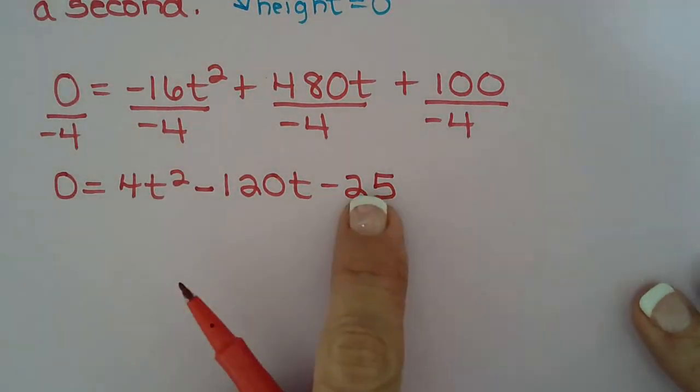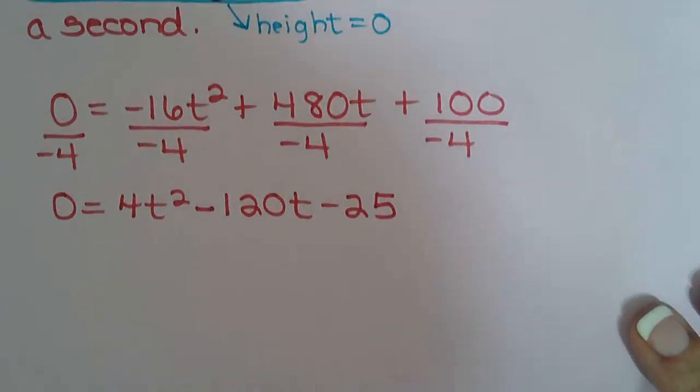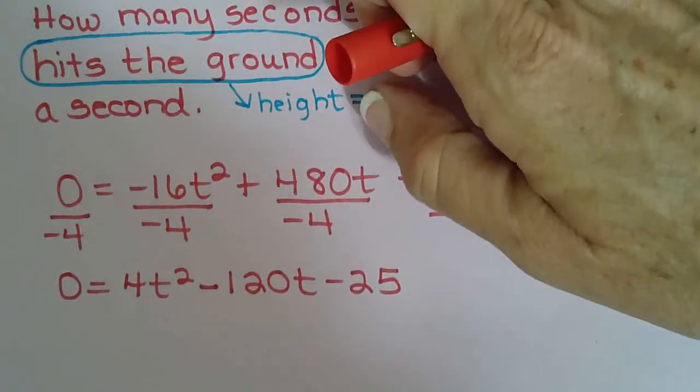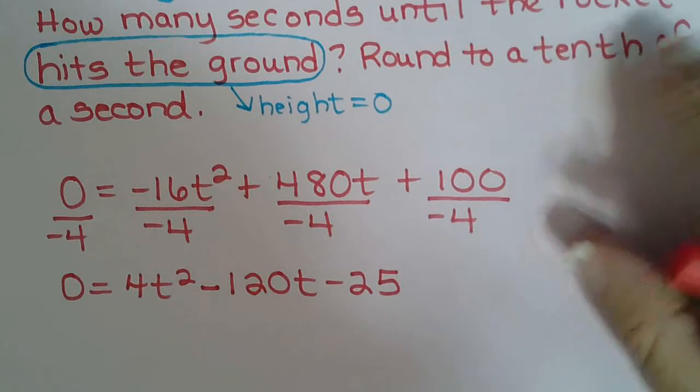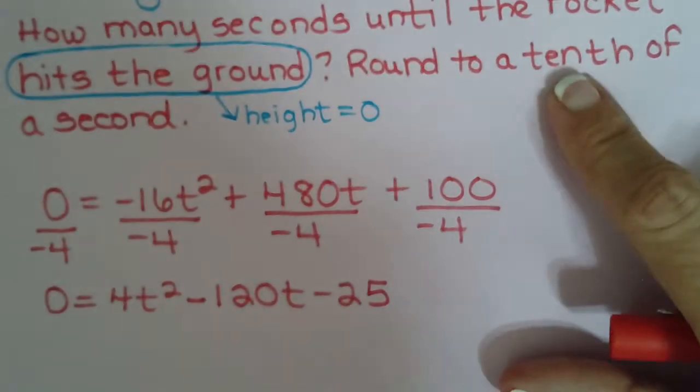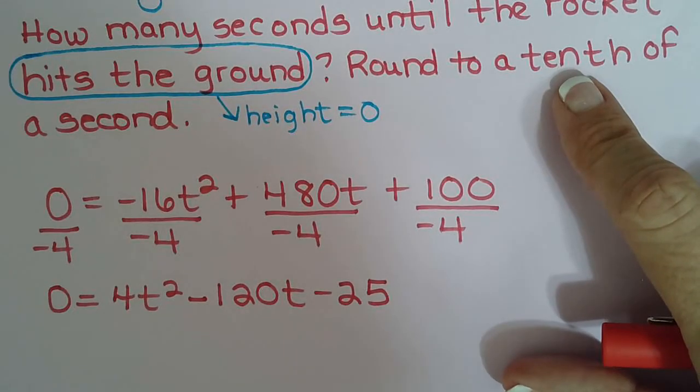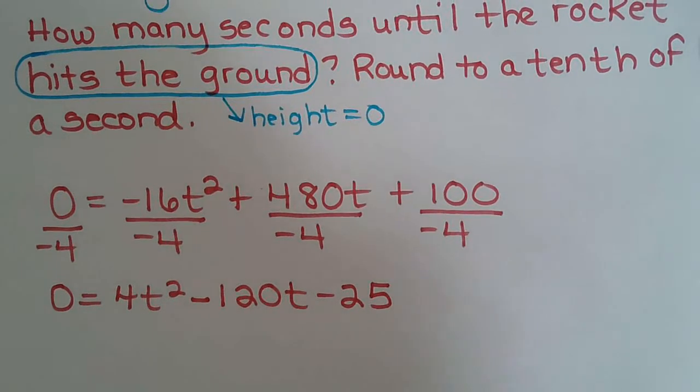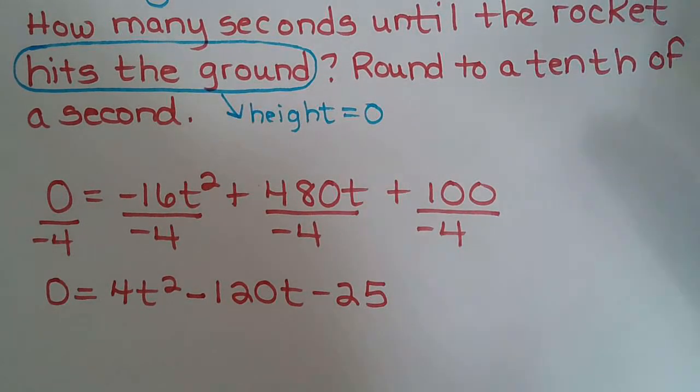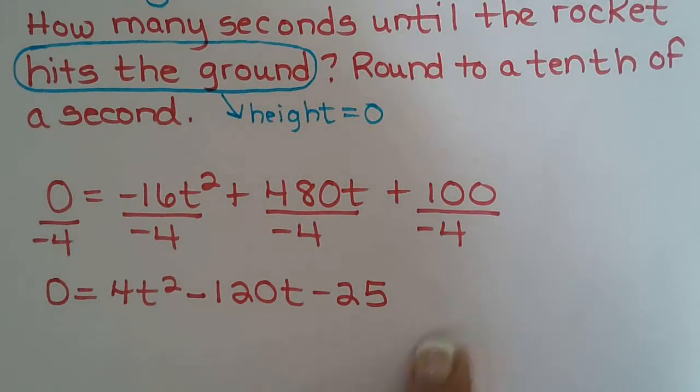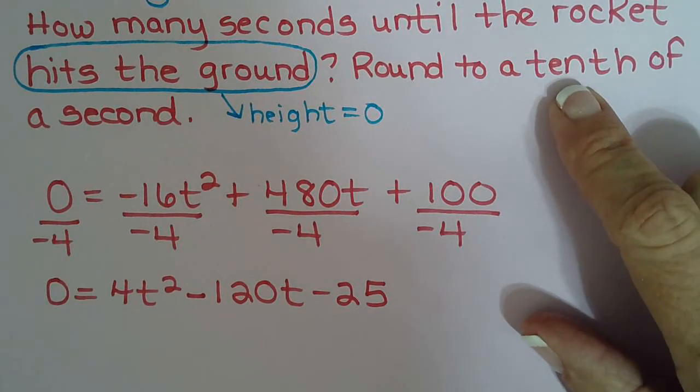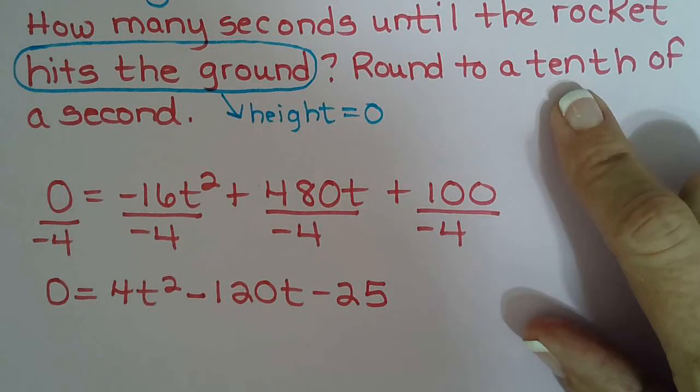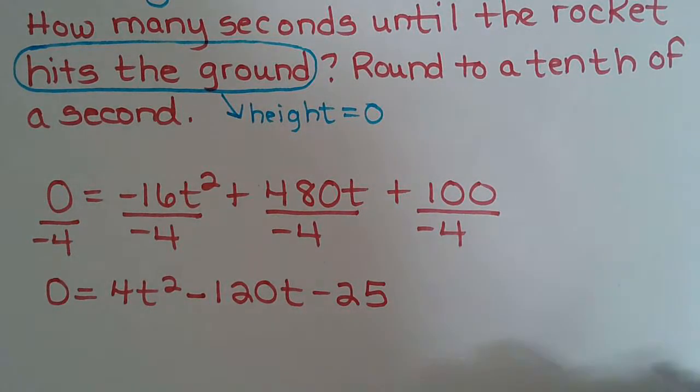So some of you may be going, oh factors of 100 that subtract to 120. Don't even try it. Why do I know that? Right here. The minute I see round, I know this is a quadratic formula problem because when we factor, we get nice whole numbers or a nice fraction like a half. When I see directions that say round, that means don't even test it. You'll see it doesn't factor. But that's the biggest hint. Round means it goes straight to the quadratic formula.